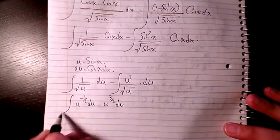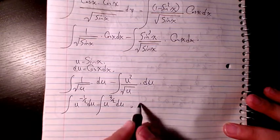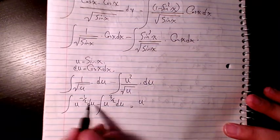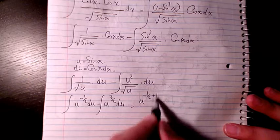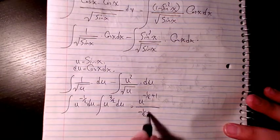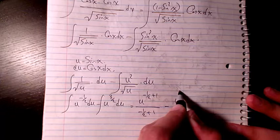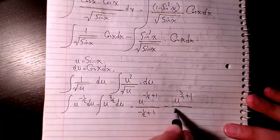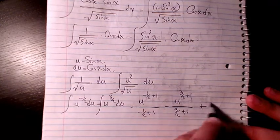Then the integration will be u to the power of negative 1/2 plus 1 divided by negative 1/2 plus 1, minus u to the power of 3/2 plus 1 divided by 3/2 plus 1, plus the constant.